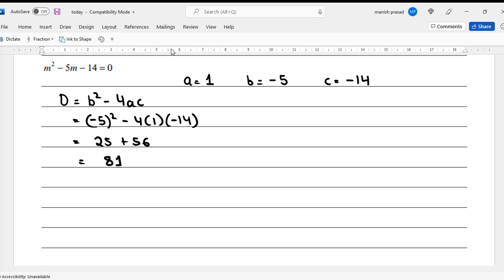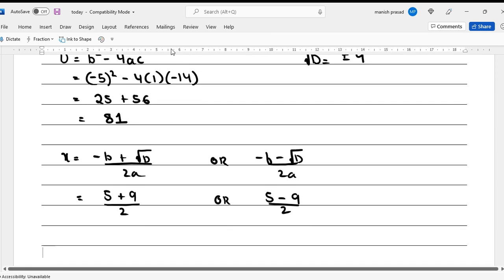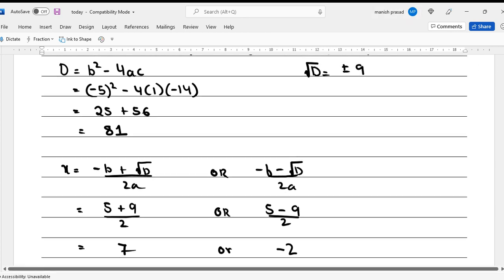This becomes 81, so under root D becomes plus or minus 9. Now if I want to find x, x equals minus b plus under root D upon 2a, or minus b minus under root D upon 2a. So I'm going to get minus b, that is 5 plus 9, and 2 times a is 2, or 5 minus 9 upon 2. Final answer becomes 14 by 2 is 7, and minus 4 by 2 is minus 2. This is how to solve it.